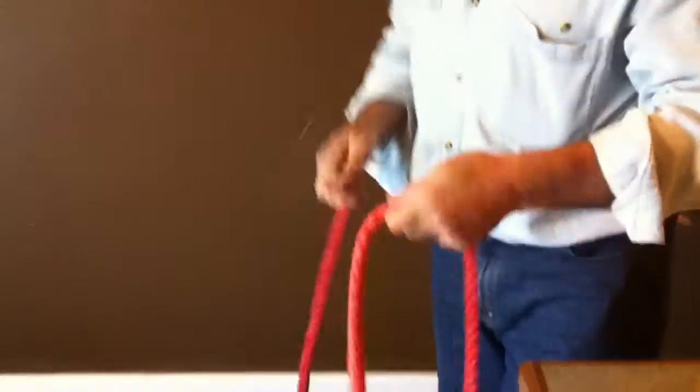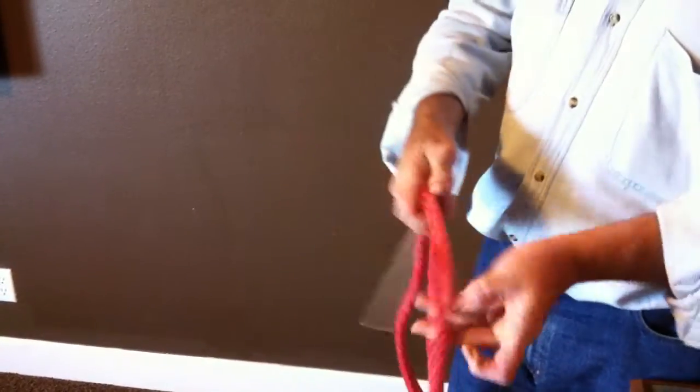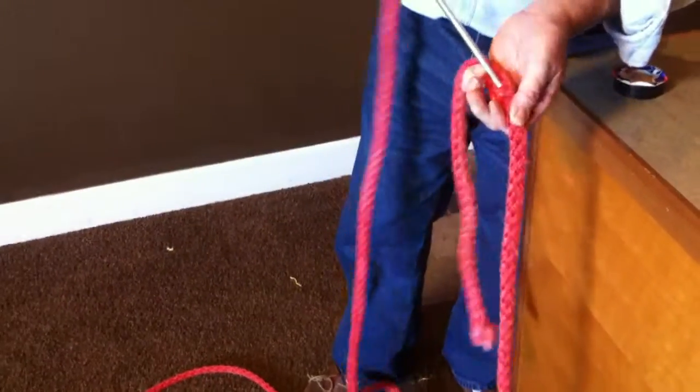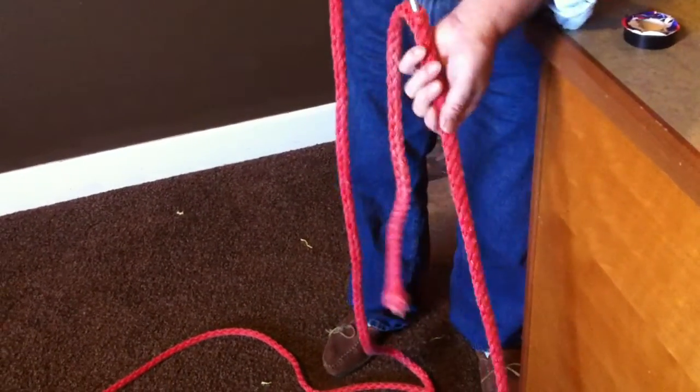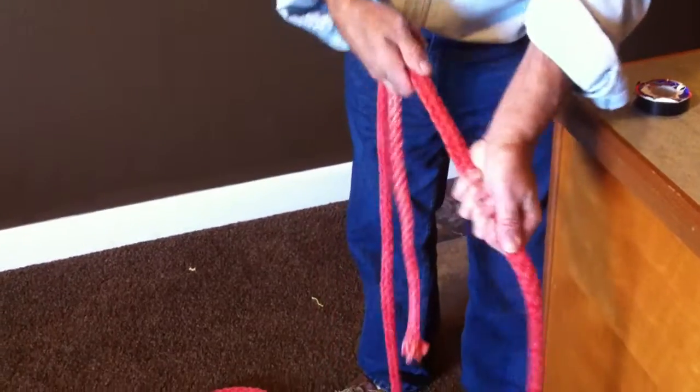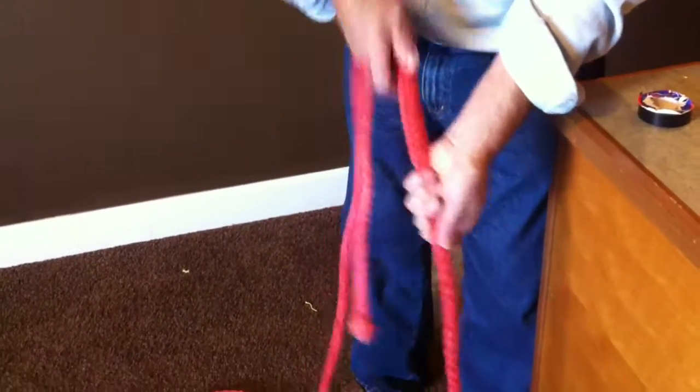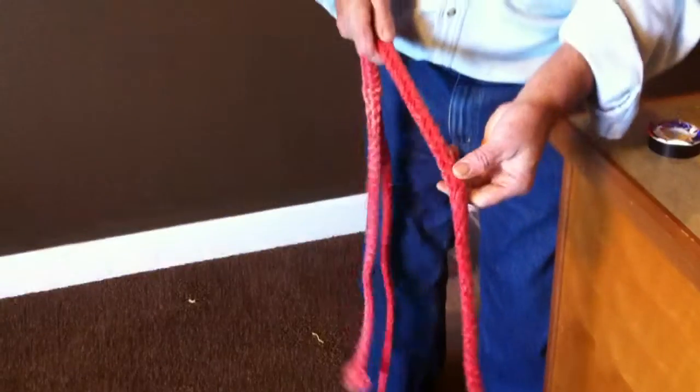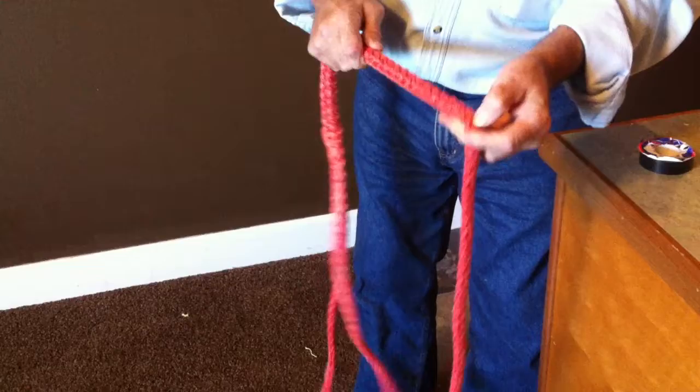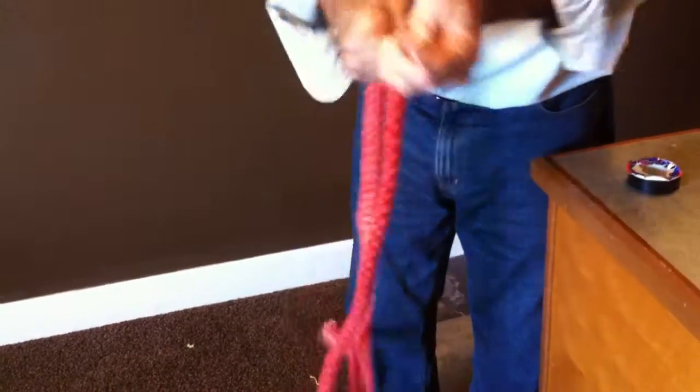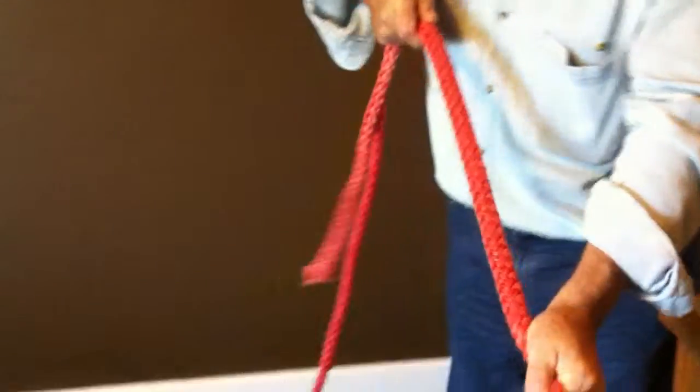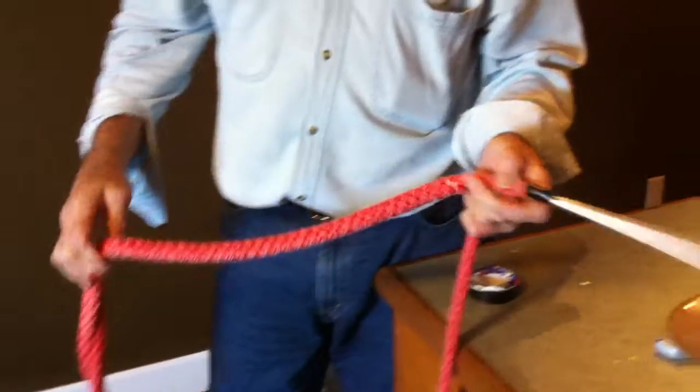Then you get the other end of the rope, insert the fid into that, into an opening right there. Push the fid down through the rope, pop that up over the tape. Once it's inside, you can go basically forever if you want. I usually like to go about two lengths of the fid, two and a half lengths of the fid, and pull it out. That's one half of the splice done.